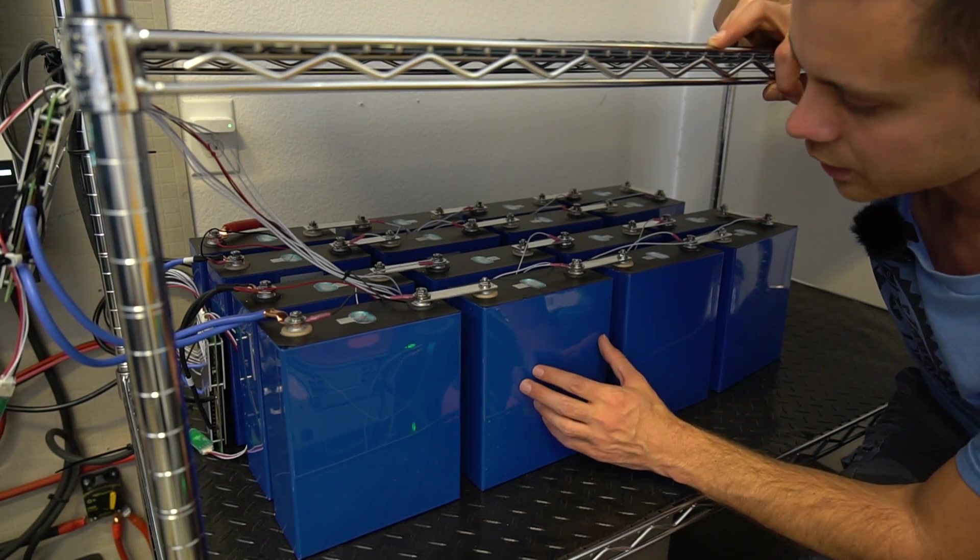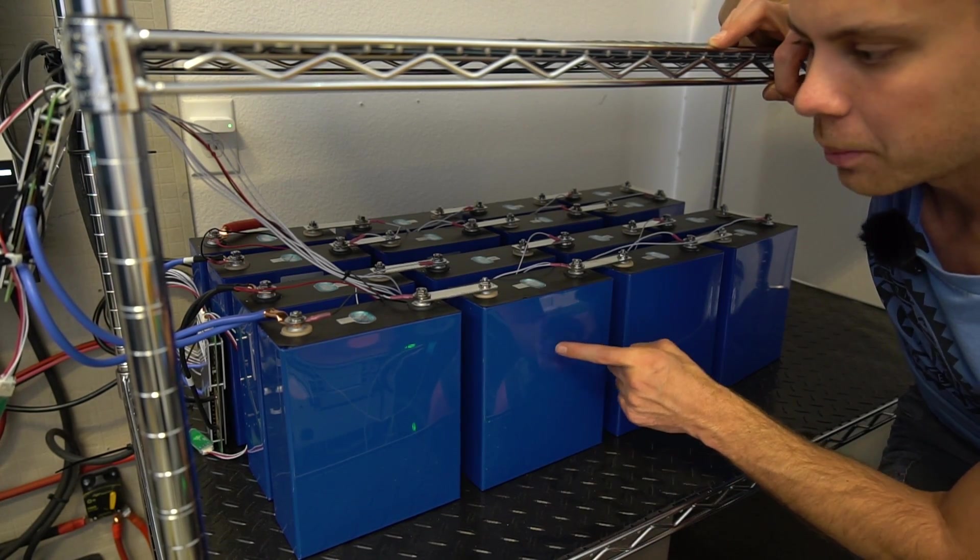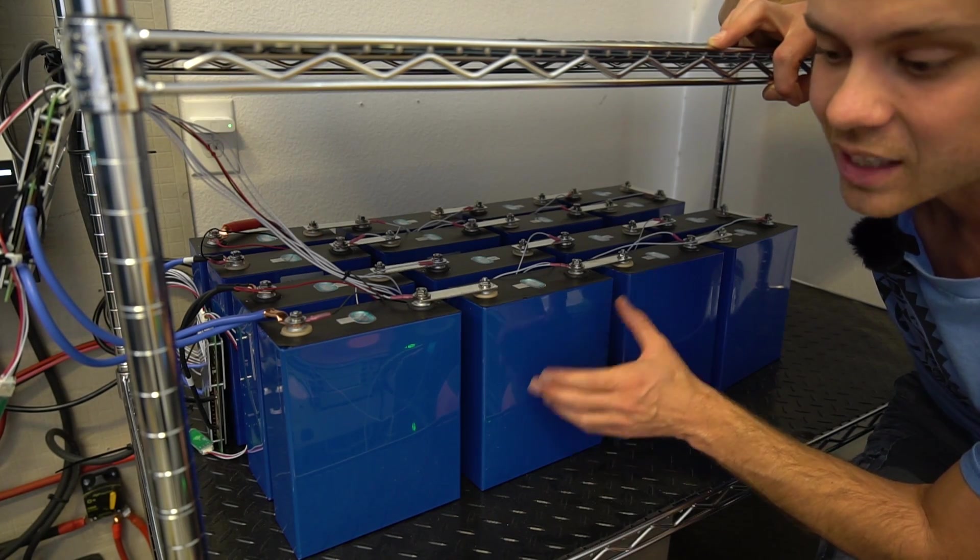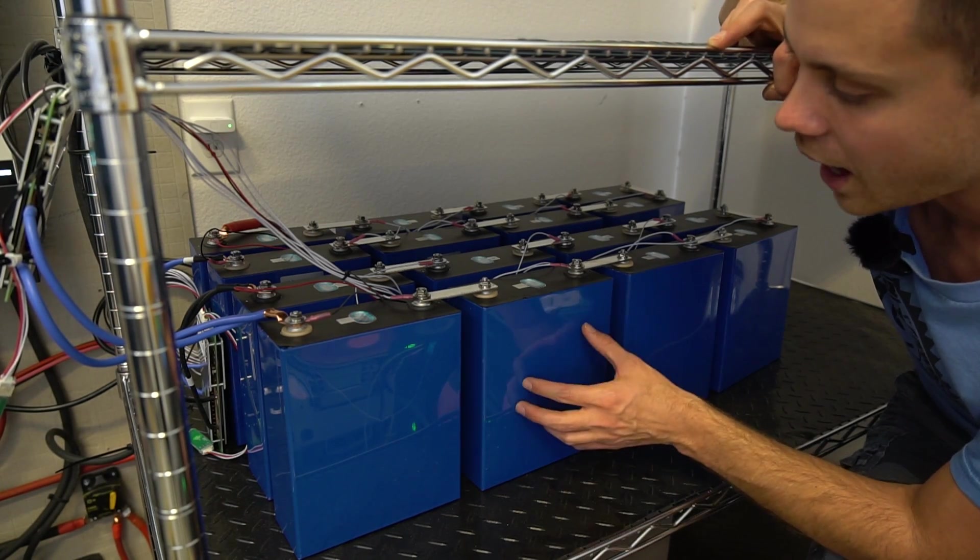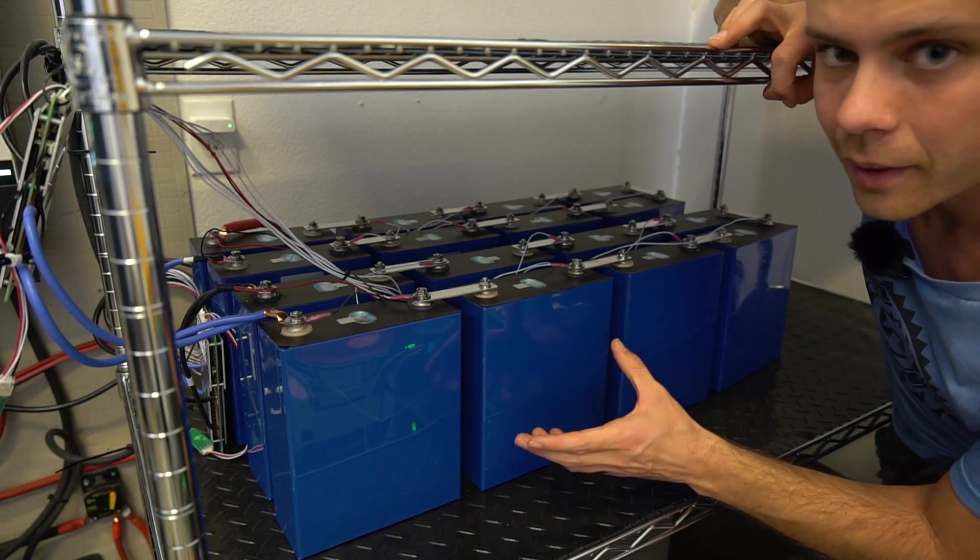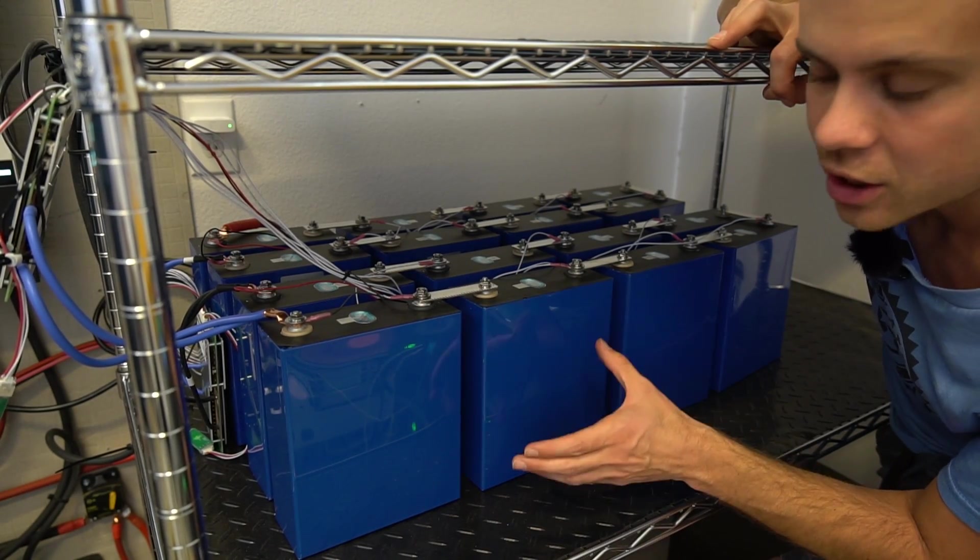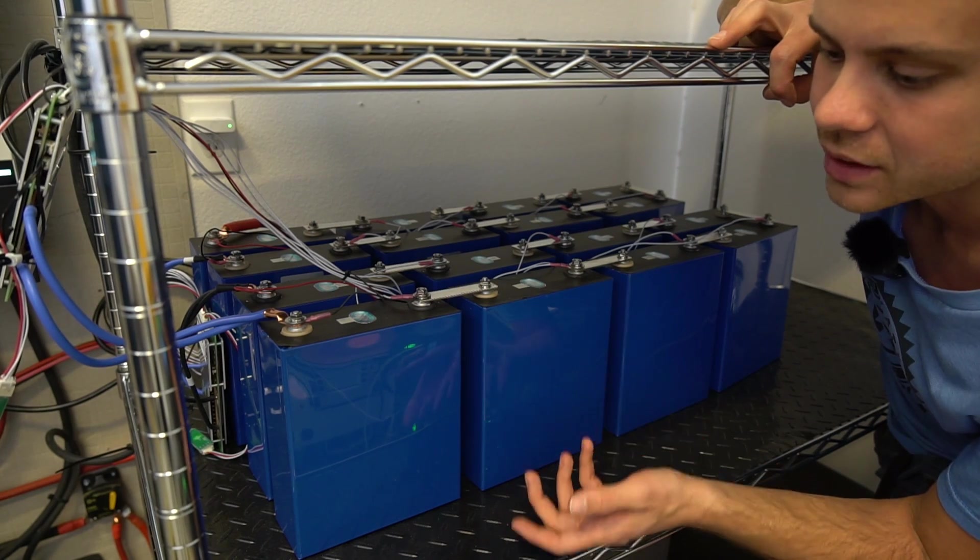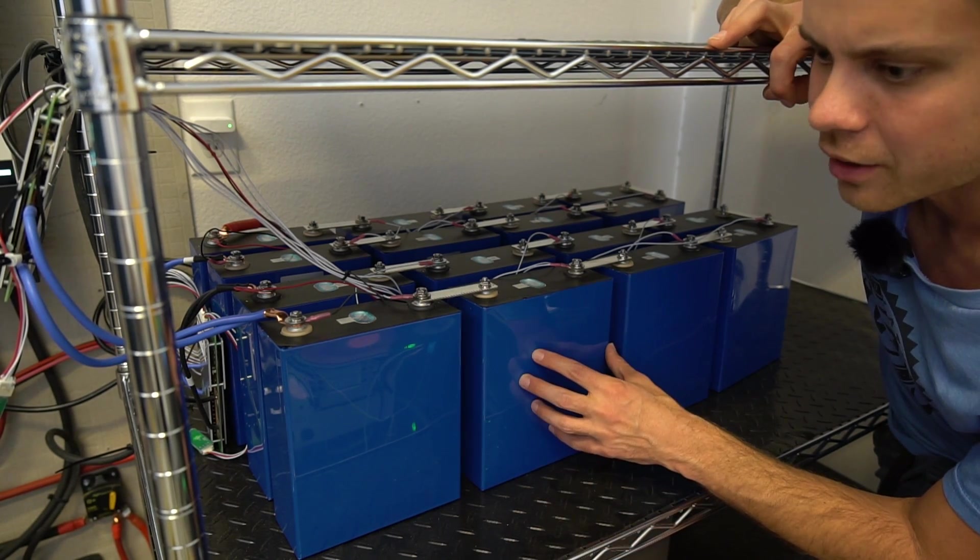I do not recommend people build with grade B cells, but this is the cheapest pack I own. This was 17 cents per watt hour. Also, grade B lithium iron phosphate is much safer to use than grade B or used or recycled NMC cells.